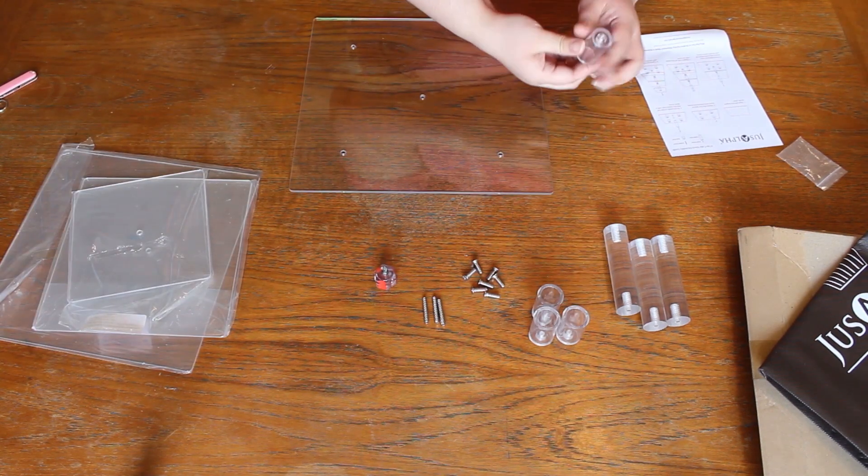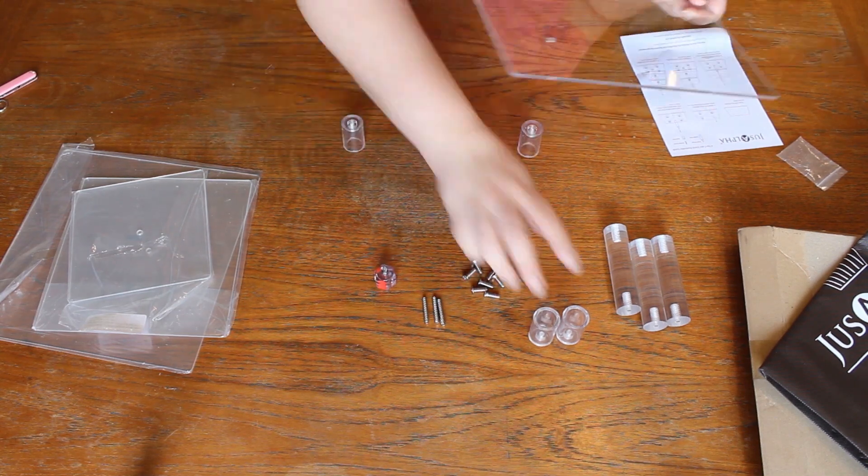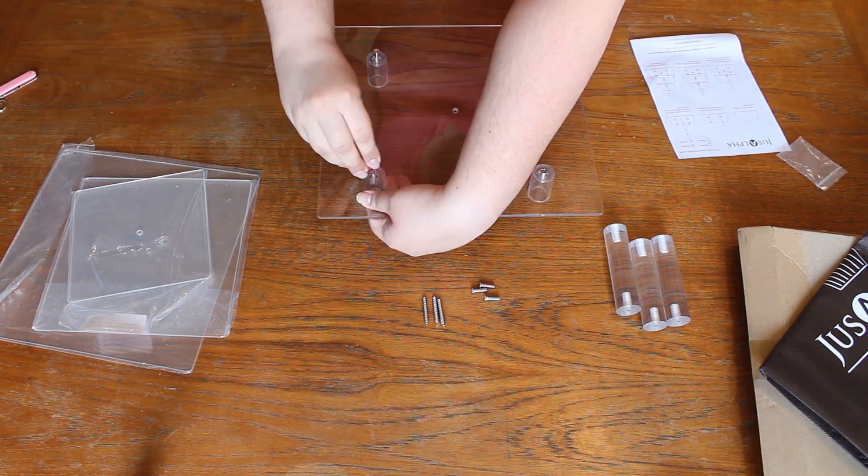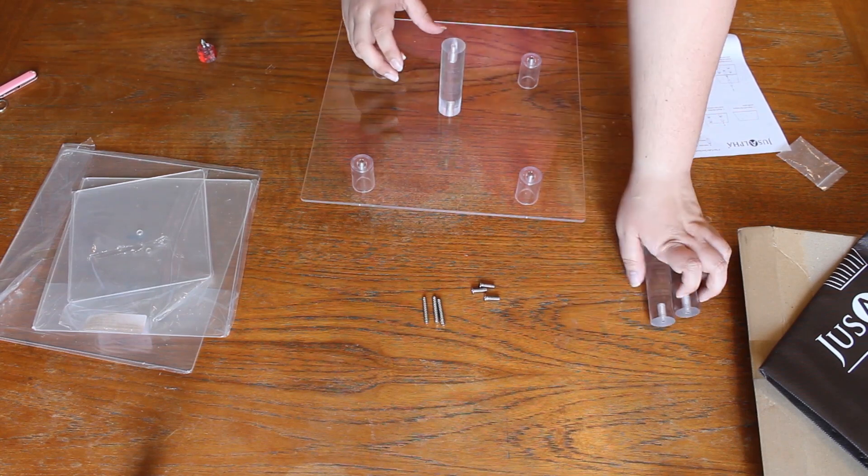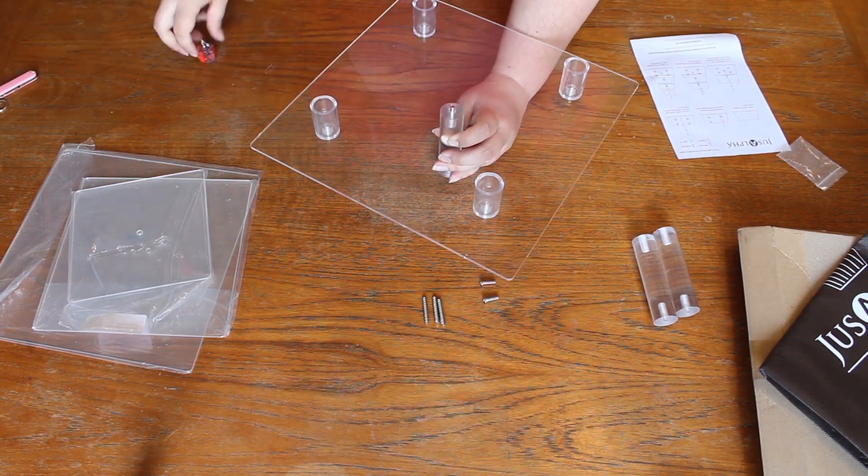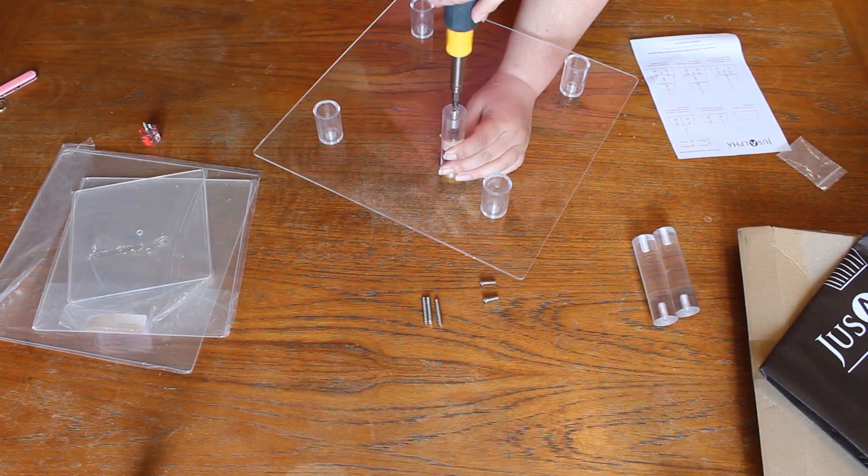First you start with the biggest acrylic piece, of course, and then you put the base stands. Screw those in to the base. Because they're base stands, of course. The center rod goes in the middle, and it has a head screw that goes on the base bottom to hold it in nice and tight.